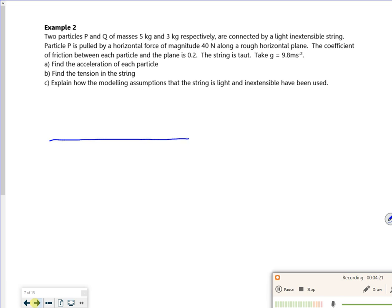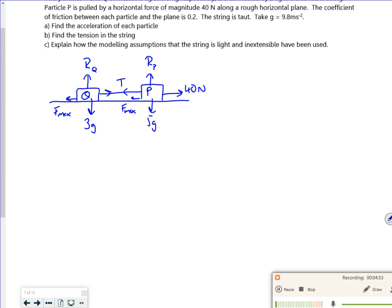Right, let's draw a picture then. So I've got P here, which is 5g, with a normal reaction for P there. It's being pulled by 40 newtons. It's got Fmax holding it back. Then there's a string, so there's tension in the string. And then there's Q. So it's almost like a car and a caravan, isn't it? You know about a car and a trailer thing? So 3g, I've got R for Q, and then Fmax.